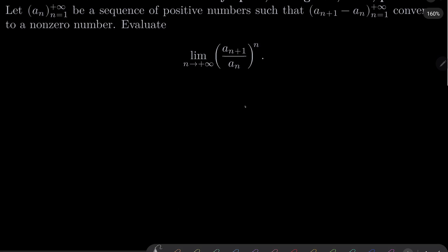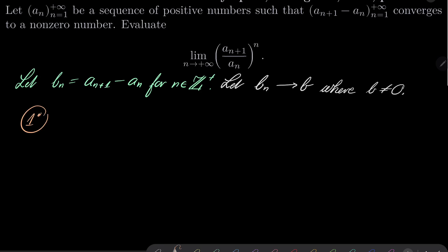All right, so let's start. Let b_n equal a_{n+1} minus a_n for n positive integers. First, notice that, and let it converge to some b, where b is non-zero. Let's consider case number one, when b is positive.